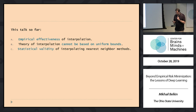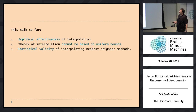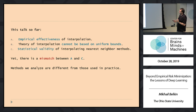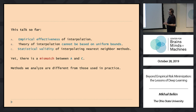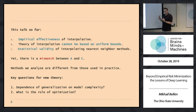So this talk so far has shown empirical effectiveness of interpolation on some examples, argued that theory of interpolation cannot be based on uniform bounds, and shown that nearest neighbor methods are statistically valid and optimal. But there is a disconnect: nearest neighbor methods are not really something we use in practice. Two key questions remain: what is the dependence of generalization on model complexity, and what is the role of optimization?